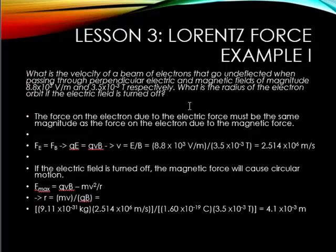So, we want to know what is the radius of the electron orbit if the electric field is turned off. Now, it's important to realize that the fields are perpendicular to each other because then the forces will cancel each other out. The force on the electron due to the electric force must be the same as the magnitude of the magnetic force. Otherwise, it would be deflected. It says very specifically, it's undeflected. So, Fe equals Fb, and remember that Fe is Qe from week 1, and the magnetic force is Qvb, where V can then be solved for algebraically. Notice that the charge cancels as E over B. So, we get 8.8 times 10 to the 3 volts per meter divided by 3.5 times 10 to the minus 3 tesla to give a value of 2.514 times 10 to the 6 meters per second.